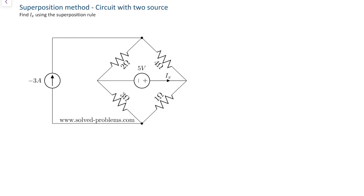So here we have a circuit with four resistors and two sources: one voltage source and one current source. When we say to use superposition, the superposition rule states that the response — voltage or current — in any branch of a linear circuit which has more than one independent source equals the algebraic sum of the responses caused by each independent source acting alone, while all other independent sources are turned off, or made zero.